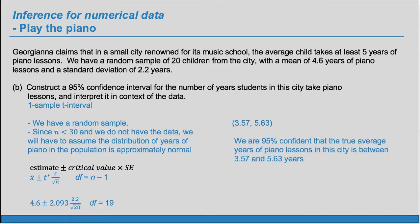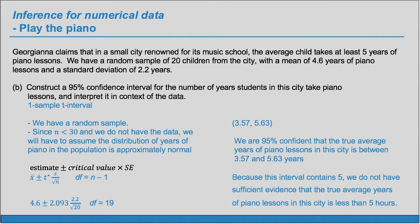We're 95% confident that the true average years of piano lessons in the city is between 3.57 and 5.63 years. Georgiana said it was 5 or more, and there are values of 5 or more in this interval — so those are reasonable values and we don't have enough evidence to reject that claim. Because this interval contains 5 as well as values slightly higher than 5, we do not have sufficient evidence that the true average is less than 5.